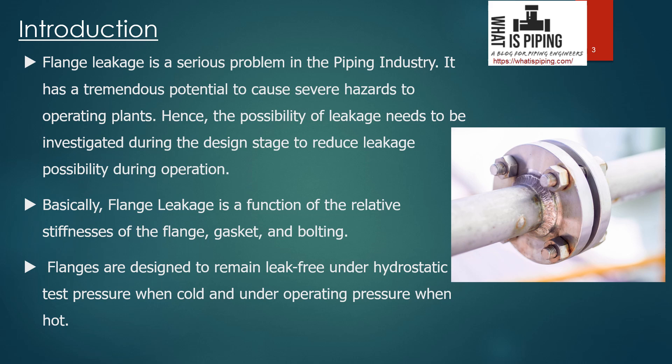Flange leakage analysis is performed based on project-specific criteria or guidelines. Basically, flange leakage is a function of the relative stiffness of the flange, gasket, and bolting — three components that impact leakage. As seen in the image, the three major elements are: the pair of flanges, the bolting along with nuts and flange fibers, and inside there is a gasket. All three must work together.